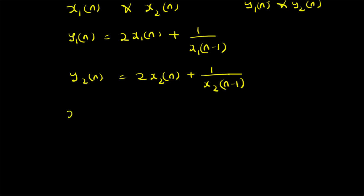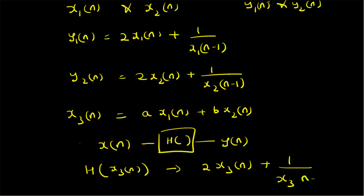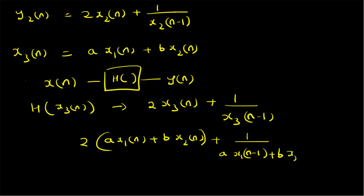Now, let us define a new input x3(n) which is basically a linear combination of x1(n) and x2(n). Given this input, the output h(x3(n)) should be equal to 2 times x3(n) plus 1 by x3(n) minus 1, and based on the definition of x3(n) this equals 2 times (a·x1(n) + b·x2(n)) plus 1 by (a·x1(n-1) + b·x2(n-1)). Let us call this equation 2.